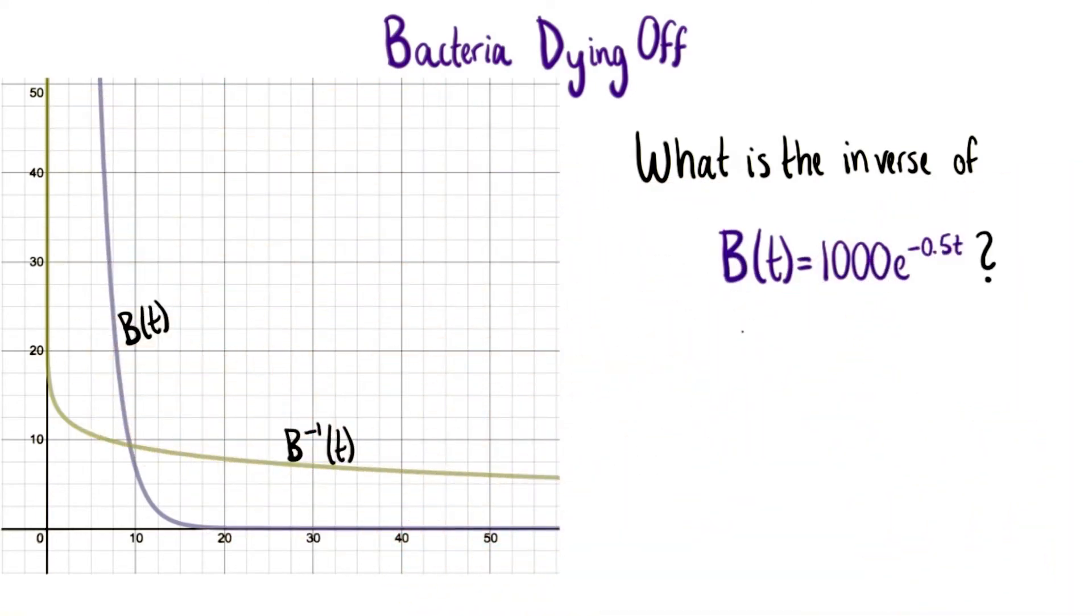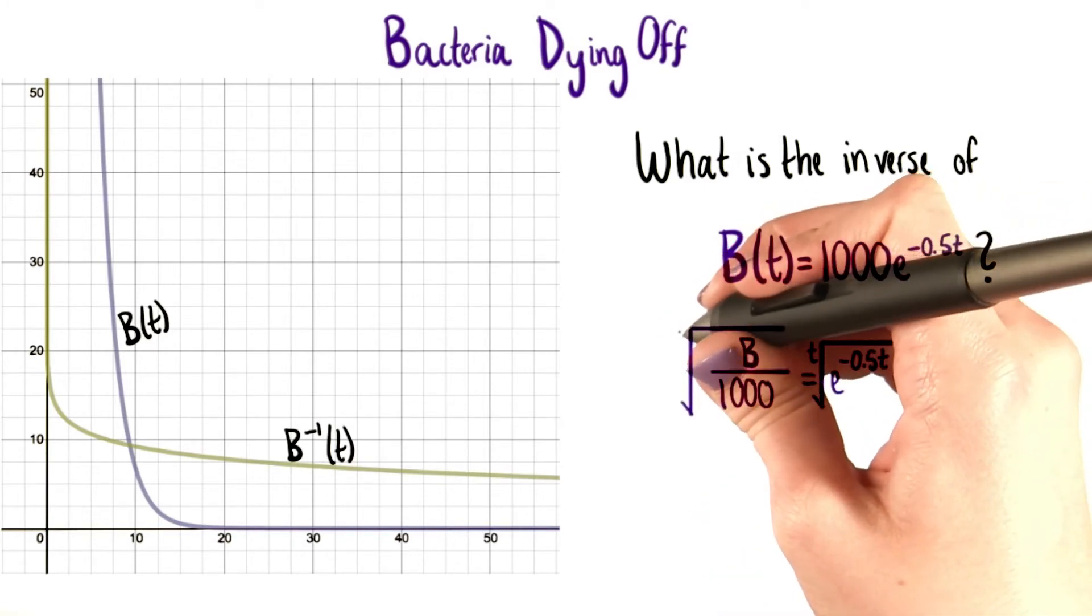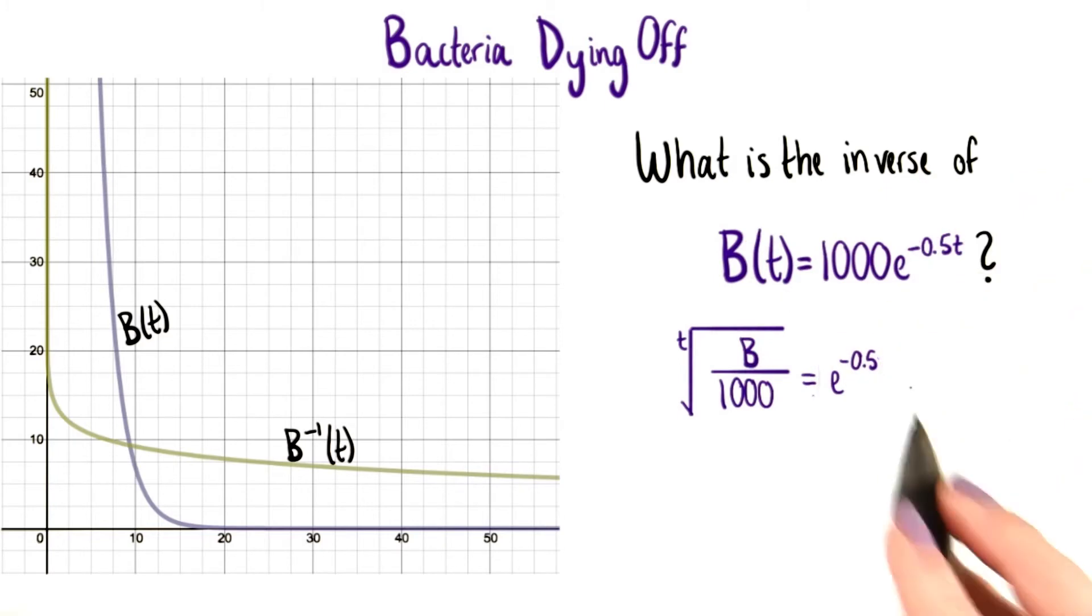Let's think about how we might do this. We could divide both sides by 1000, and then maybe take the t-root of both sides. That would get rid of the t on the right-hand side in the exponent,